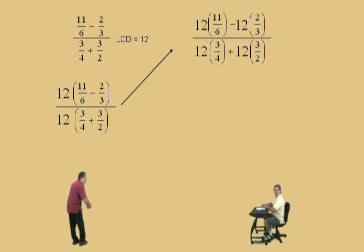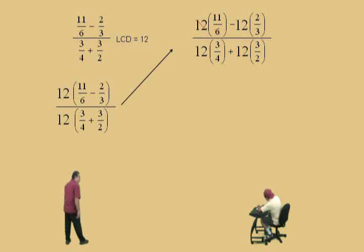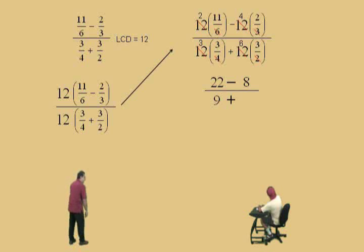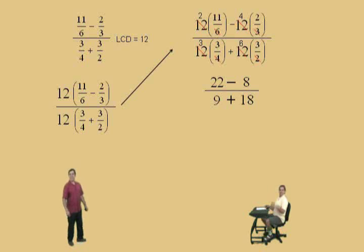Okay. Now let's do our kung fu fraction technique, Charlie. Six goes into 12, 2 times. And 2 times 11, 22. Very nice there. Bring down your subtraction. Three goes into 12, 4 times. And 4 times 2, 8. Very nice there, Charlie. Four goes into 12, 3. And 3 times 3, 9. Very nice. Bring down your addition. And now 2 goes into 12, 6 times. And 6 times 3, 18. Very nice there.